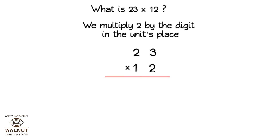We multiply 2 by the digit in the units place. 3 into 2 is 6. We multiply 2 by the digit in the tens place. 2 into 2 is 4.